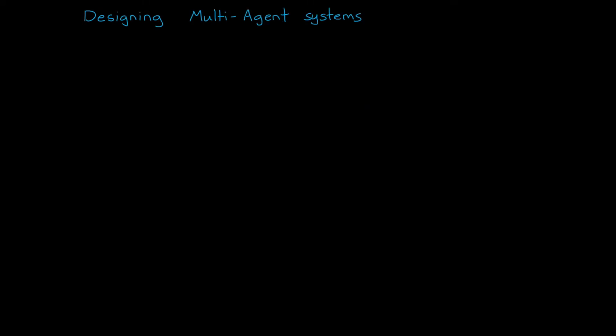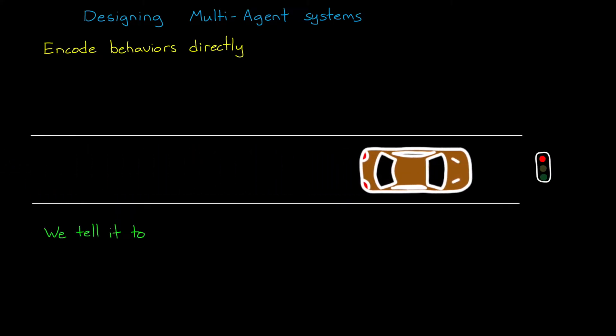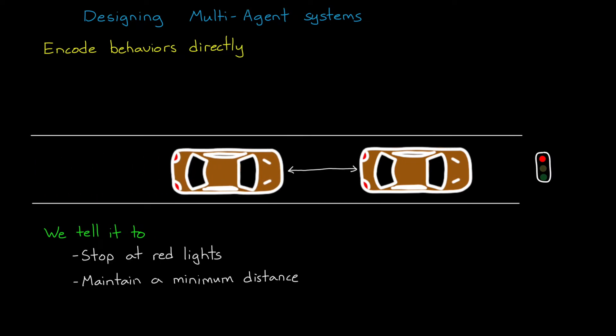Now, one way to design a multi-agent system is that we, as humans, determine ahead of time what we want the agents to do in different situations, and then we impart that knowledge directly into the agent. For example, for autonomous vehicles, we could write code that already understands that it needs to stop at red lights, and that it should maintain a minimum distance from the car in front of it, and that it should stay between the road lines. So, basically, through software and physical design and procedures, we are defining how the agents should act given a particular environment state.